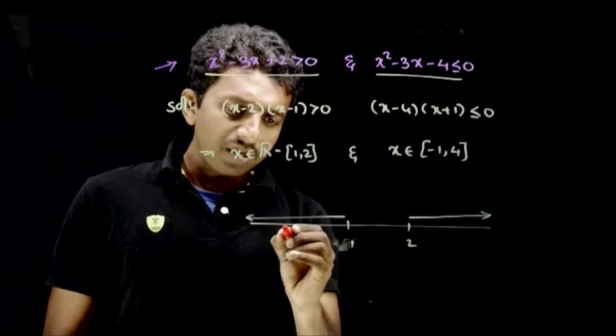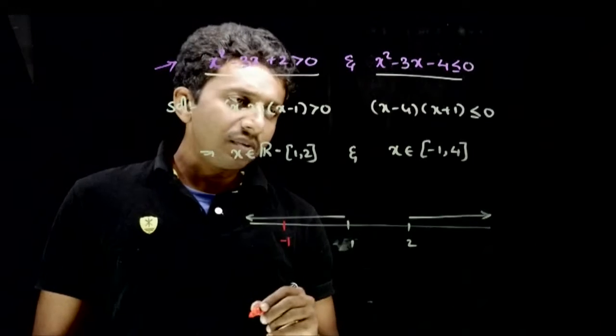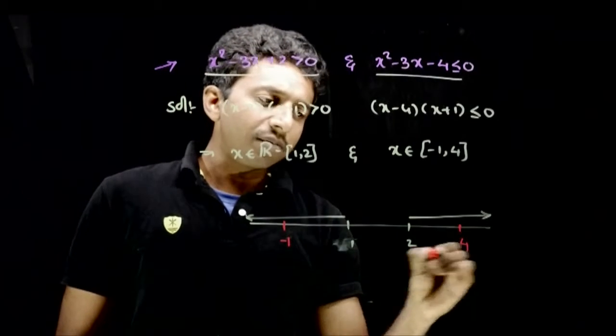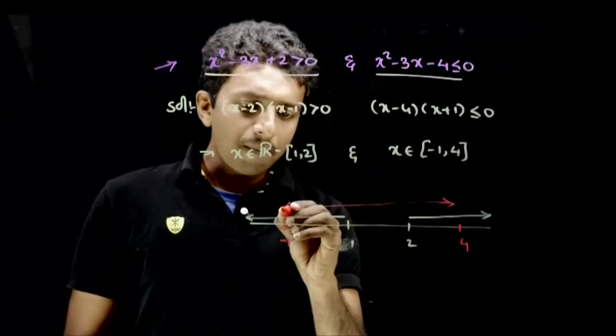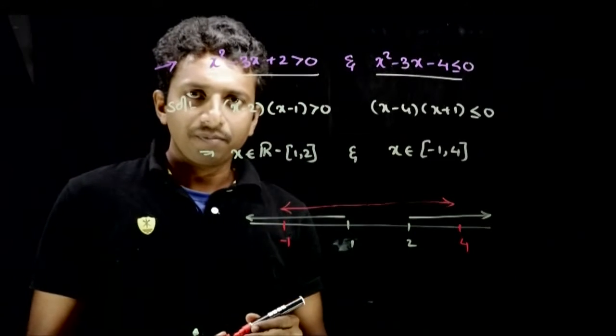The second solution is between minus 1 and 4. So minus 1 will be somewhere here and 4 will be somewhere here, and my answer lies between minus 1 and 4, closed.